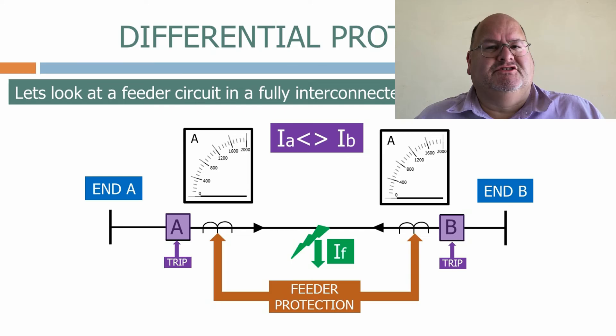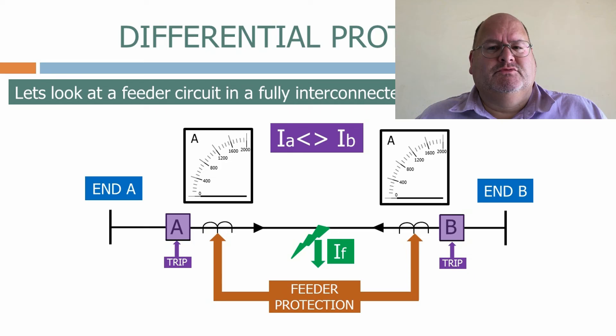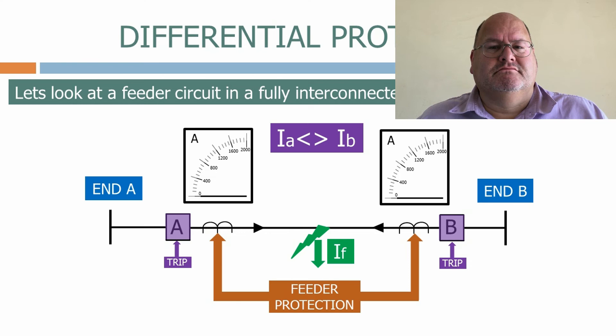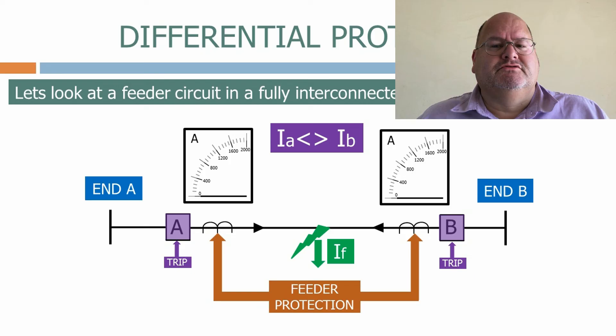Systems are designed to be either solidly connected, where we need to deal with the possibility of back feeds, or split, where we don't. Solid systems have a lot more flexibility, which is why we use them on transmission systems, and the protection systems at this voltage level are complex anyway, so there's no real financial impact from the back feeds. For distribution systems, we normally only have simple overcurrent protection. To provide a solid system, we would need directional overcurrent protection, which is quite an additional expense as it also requires voltage transformers. For this reason, we normally keep it simple and operate a split system at distribution level.